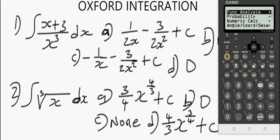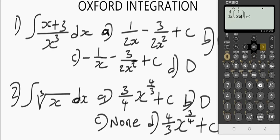Under function analysis, press execute — we have the derivative symbol. Let's differentiate option A: use a fraction, enter (1/2)x, then use the power function, minus a fraction 3 over 2x squared. The plus C is not included here — it is just a constant attached to the output of indefinite integrals. Put the expression at x = 2, ensure the brackets are balanced, then press execute to see if we get 5/8 or 0.625.